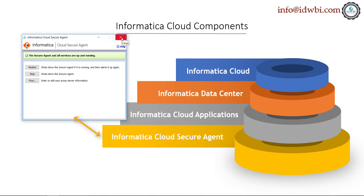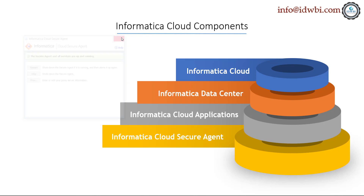The Secure Agent is the installable component of the cloud installed on your local machine or server. For example, if you have an Oracle database from which you want to pull data, you install the Secure Agent on the Oracle database server. If you have a file system where you want to store files, you install the Secure Agent on the Windows machine and it will be able to access the files. You'll understand all these components in more detail once we look at the architecture.